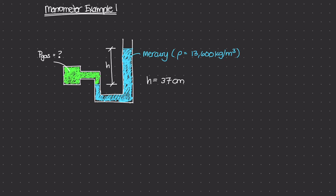So this is mercury — it is incompressible, and the system is in hydrostatic equilibrium. What do we know about liquids in hydrostatic equilibrium? Well, if we were to draw a horizontal line anywhere inside of this tube, we know that the pressure along that line inside of the tube is the same. So the two points that I've drawn here are going to have the same pressure.